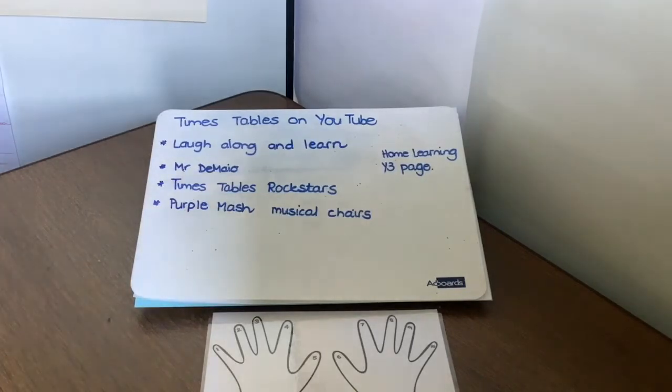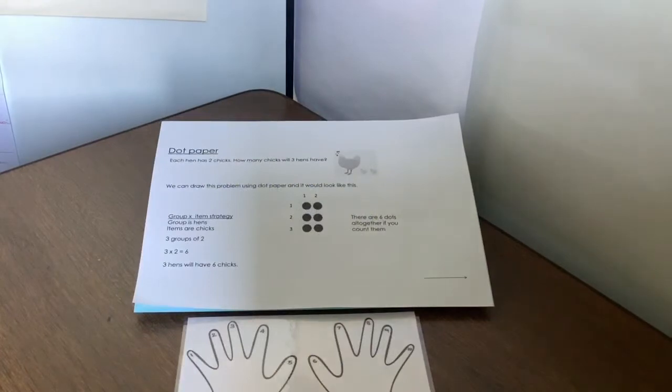So today it's all about dot paper. Let's move on with dot paper. Let's look at today's question. Each hen has 2 chicks. How many chicks will 3 hens have?